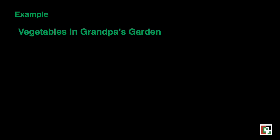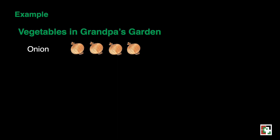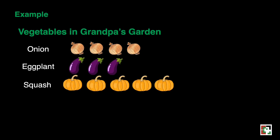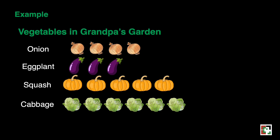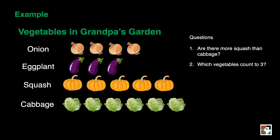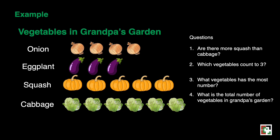Next example: vegetables in grandpa's garden. We have onions, eggplants, squash, and cabbages. There are four questions. First: are there more squash than cabbages? Second: which vegetable count is three? Third: what vegetable has the most number? And last: what is the total number of vegetables in grandpa's garden?